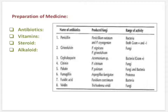Now, vitamins. Vitamins are the micronutrients required for the growth of living organisms. Vitamins B complex, Vitamins A, and Vitamins B12 are found respectively from Saccharomyces cerevisiae and Eremothecium ashbyii.